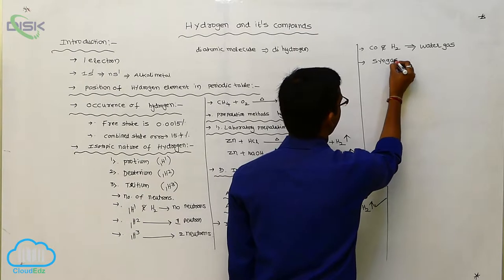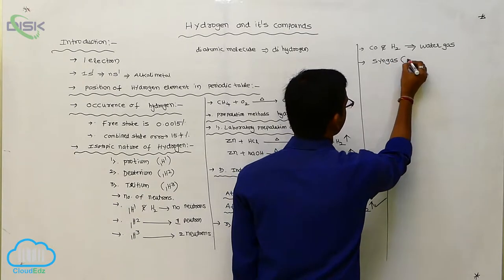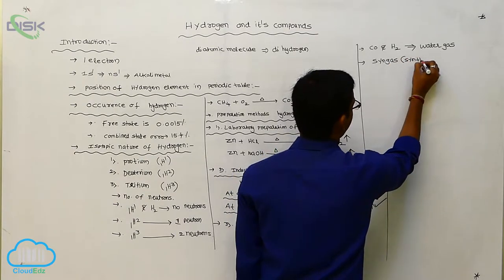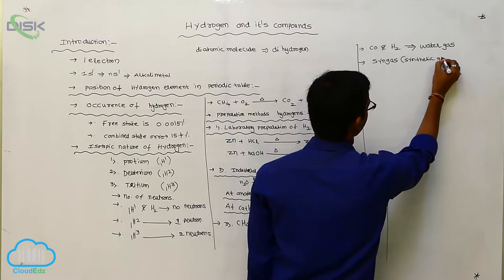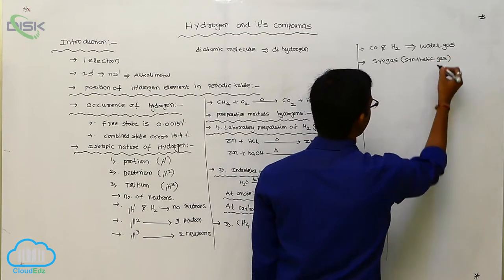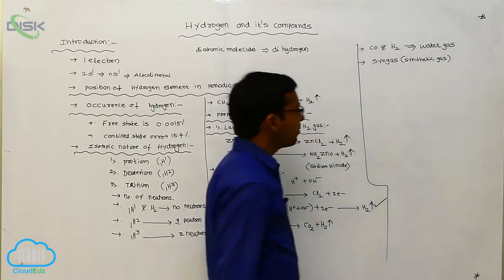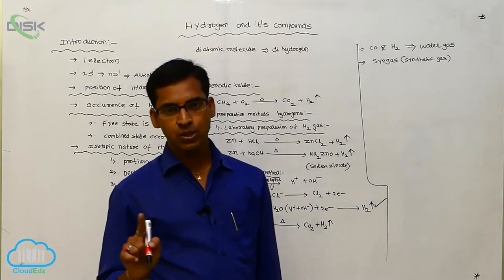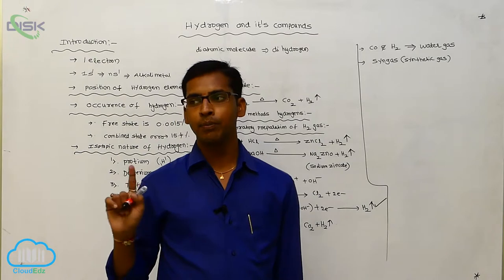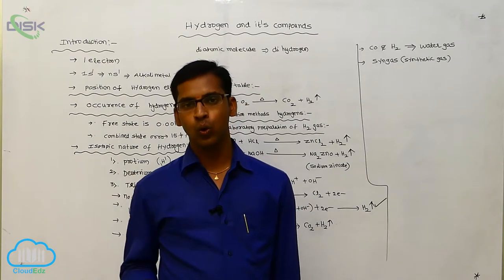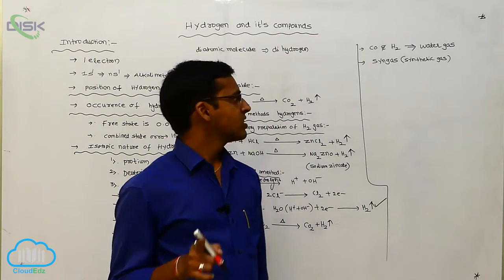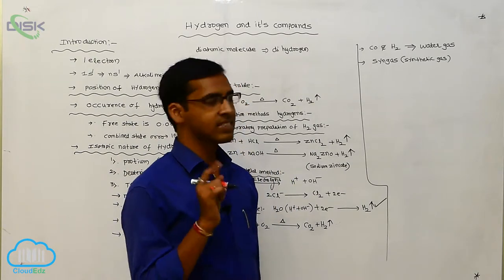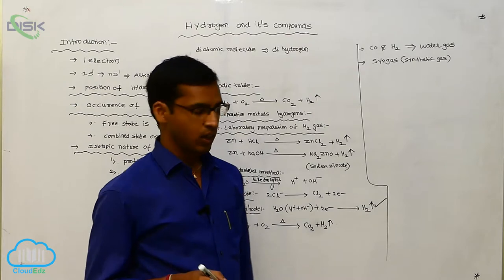The preparation of methanol from carbon monoxide and hydrogen is called syngas, simply called synthetic gas. Carbon monoxide and hydrogen used to prepare methanol is called synthetic gas or syngas.